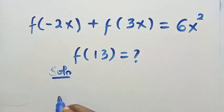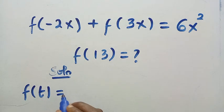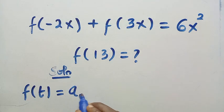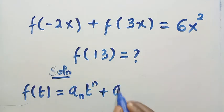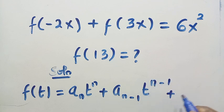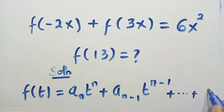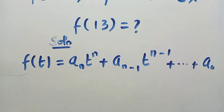If we consider the solutions, we have f of minus 2x as the first domain and f of 3x as the second domain. Assume a solution f of t equals a_n · t^n plus a_(n-1) · t^(n-1) plus a_(n-2) · t^(n-2), and so on down to the constant a_0. Since we have a quadratic on the right-hand side, the power must be 2.